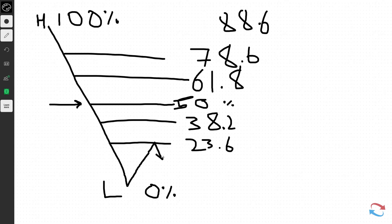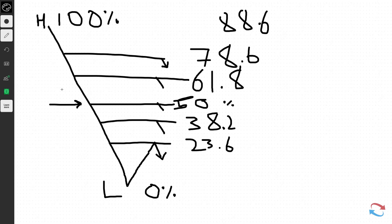Traders will be looking to get short at any of these levels. As a 23.6% or 38.2% retracement of the move from high to low, these are used as resistance areas and resistance zones to try to get short. Now we're going to look at how to find the Fibonacci tool in TradingView, and also the best ways that traders trade Fibonacci ratios.